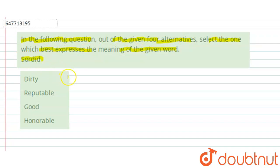Now we have a word given which we have to find out. It means the same meaning as the given word. And we are given 4 options: dirty, reputable, good and honorable.